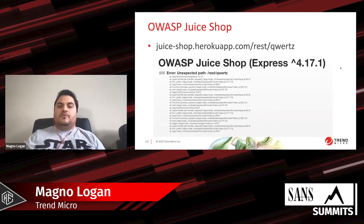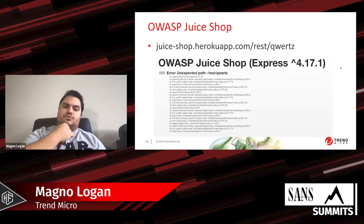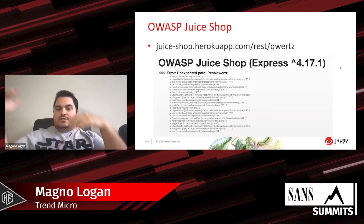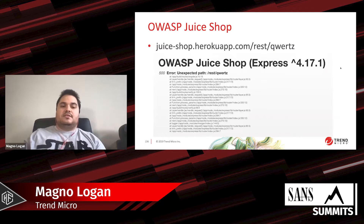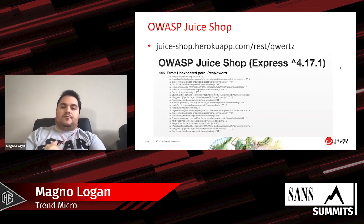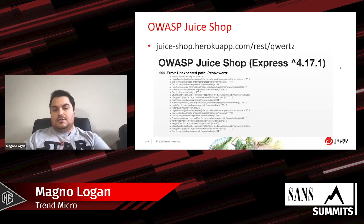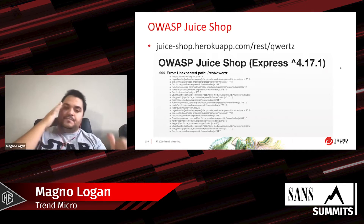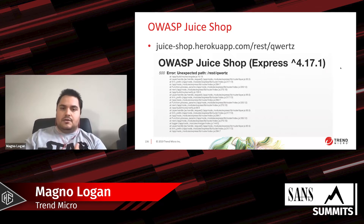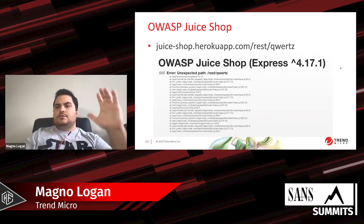Here's an example from Juice Shop itself — there's a web version available online to try out. By accessing a web endpoint that doesn't exist, I get this stack trace with error information from the Juice Shop, revealing internal files and internal paths. This gives an attacker a lot of information about how the application works. Let's try something else.